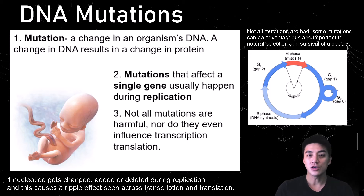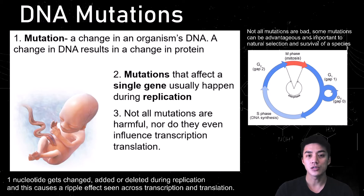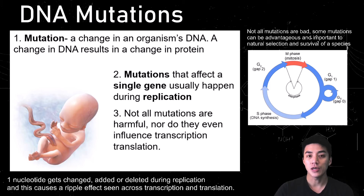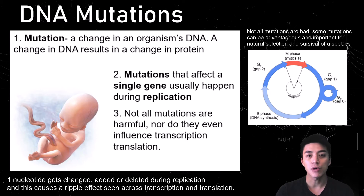A mutation is a change in an organism's DNA, and a change in DNA results in a change in protein. Mutations happen during the S phase of DNA synthesis when replication takes place. One nucleotide gets changed, added, or deleted during replication, and this has a ripple effect seen across transcription and translation, resulting in a different protein and enzyme being produced.